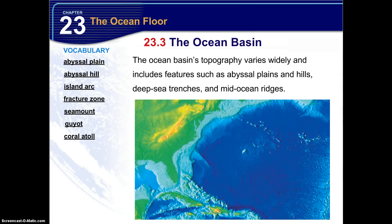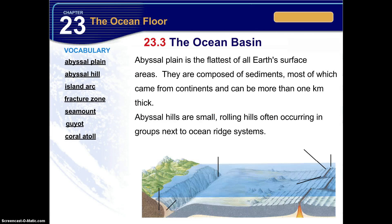Now the ocean basin has a wide range of topographical features, and natural forces change these features over time. The abyssal plain is the flattest of all Earth's surface areas. They are composed of sediments, most of which come from the continents and can be more than one kilometer thick in some areas. The abyssal hills are small rolling hills, often occurring in groups next to ocean ridge systems.